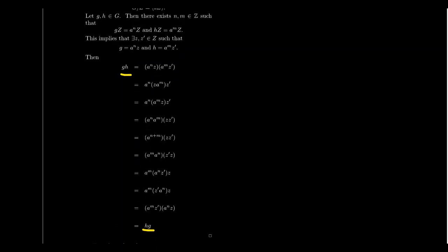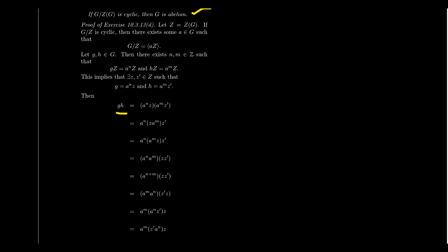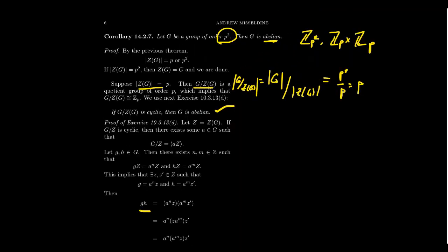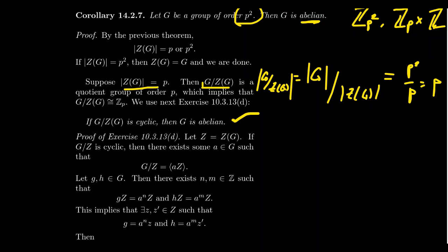That finishes the homework exercise. Coming back to the original statement: G mod its center has order P, which is necessarily isomorphic to ZP, so it's cyclic. Therefore G was originally abelian. The second case — where the center has order P — is actually vacuous, because if G were abelian its center would be the whole group, not just order P. So that case leads to a contradiction, but the conclusion we wanted still holds. People often skip over those details since the contradiction was the desired result.